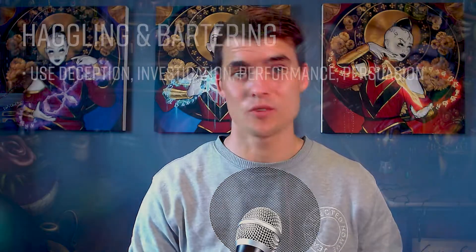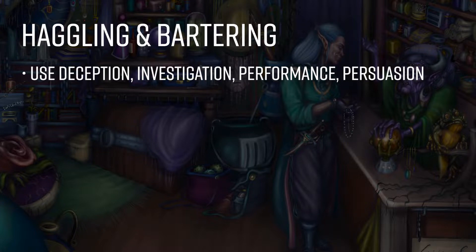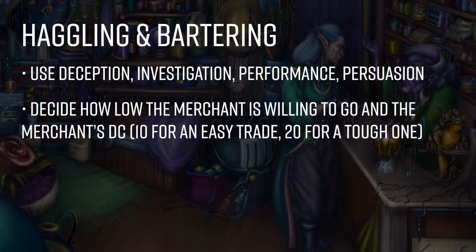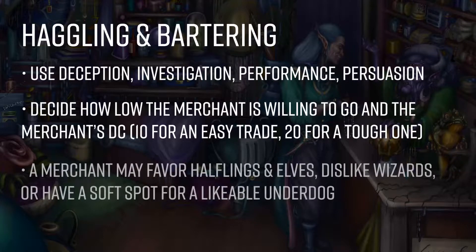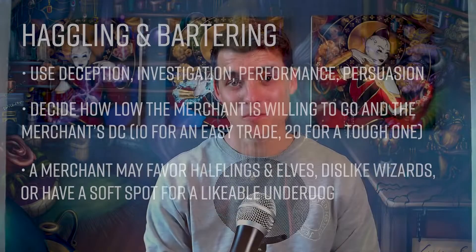As for how the characters should haggle and barter — that's also something the 5e rules don't cover well. I suggest using abilities tied to intelligence and charisma: investigation, persuasion, performance, deception — and allow characters to use these ability checks to haggle with the merchant. You can set a DC based on how friendly the merchant is, and perhaps give characters advantage based on how much the merchant likes them or if they can come up with a good argument. We're still playtesting more specific rules, but they will be present in Wanderer's Guide to Merchants of Magic when published.